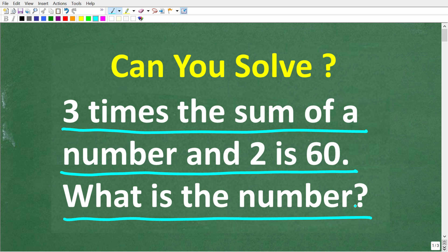All right, now feel free to use a calculator. But if you think you know the answer, put that into the comment section. I'm going to show you the correct solution in just one second. Then I'm going to solve this problem step by step. So one more time, three times the sum of a number and two is 60. What is this number?